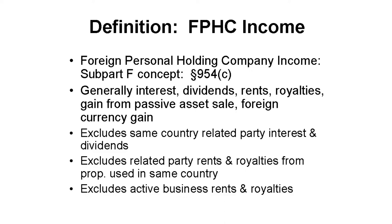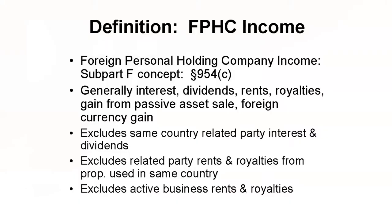FPHC income excludes same-country, related-party interest and dividends. For determining the basket of income inside a foreign subsidiary, the dividends part is irrelevant since the Section 902 rules result in tiering up of E&P and taxes. FPHC income also excludes related-party rents and royalties from property used in the same country, and active business rents and royalties. There are also exceptions to this set of exceptions for determining the basket of income.